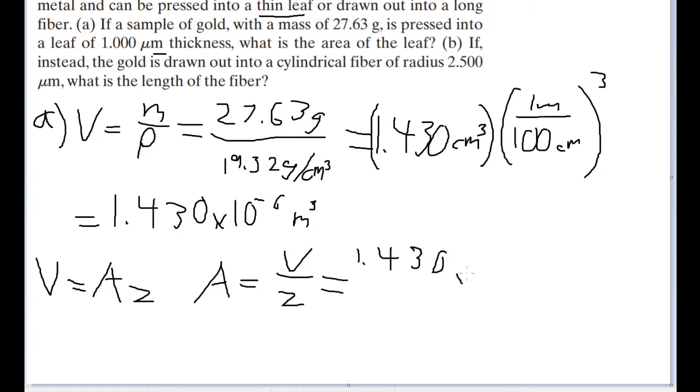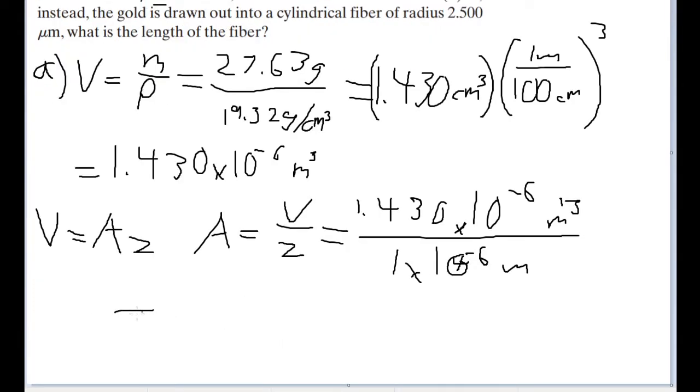So that's 1.430 times 10 to the negative sixth meters cubed divided by our unit for the thickness. So that is going to be 1 times 10 to the negative sixth meters. And plugging that into our calculator, the answer we get for the area is going to be 1.430 meters squared. And that is our answer for the side area of the piece of gold.